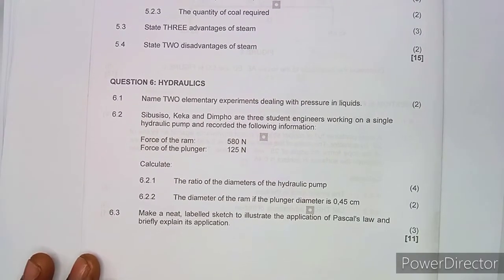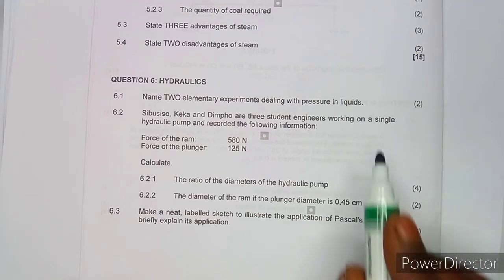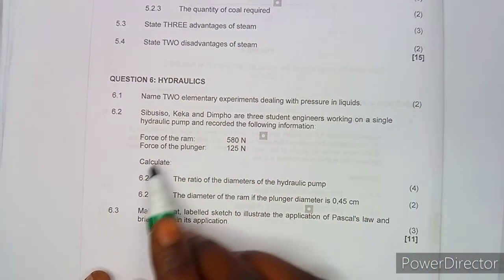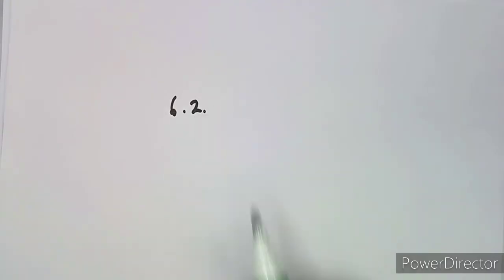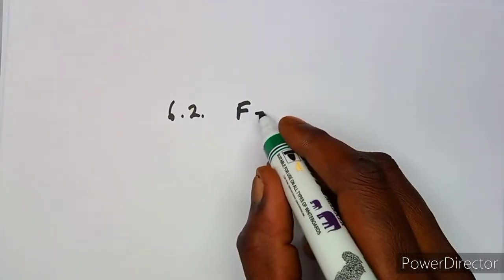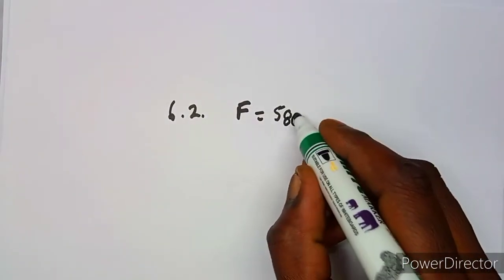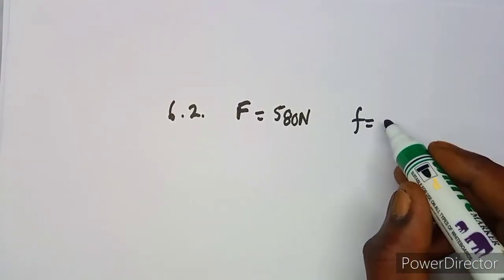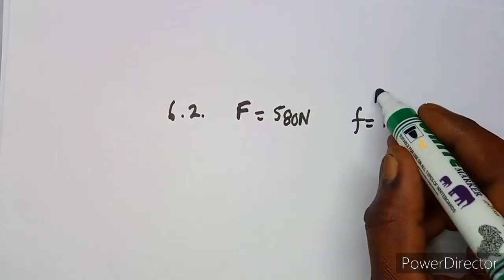On 6.2, Tempo and three student engineers working on a single hydraulic pump recorded the following information. When working with the hydraulic pump, we have the RAM and the plunger side. The force on the RAM is 518 newtons and the force on the plunger is 125 newtons.